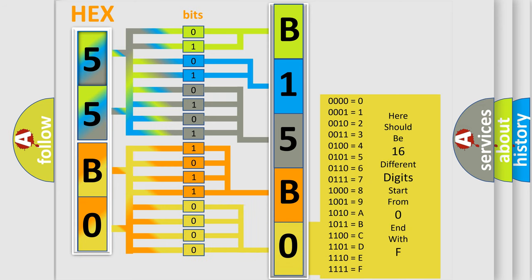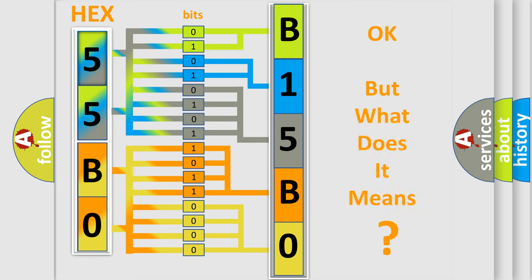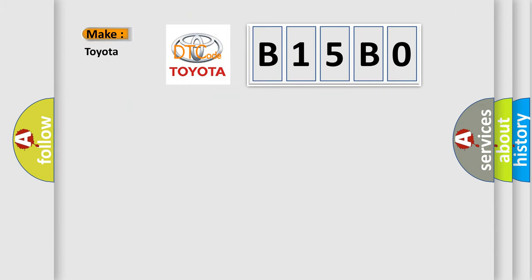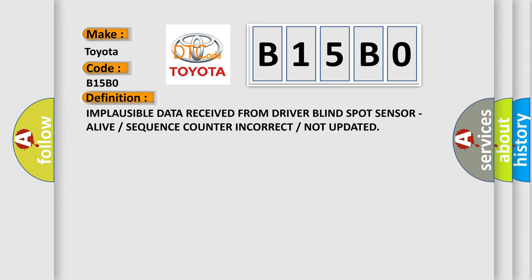We now know in what way the diagnostic tool translates the received information into a more comprehensible format. The number itself does not make sense to us if we cannot assign information about what it actually expresses. So, what does the diagnostic trouble code B15B0 interpret specifically for Toyota car manufacturers? The basic definition is: implausible data received from driver blind spot sensor, alive or sequence counter incorrect or not updated.